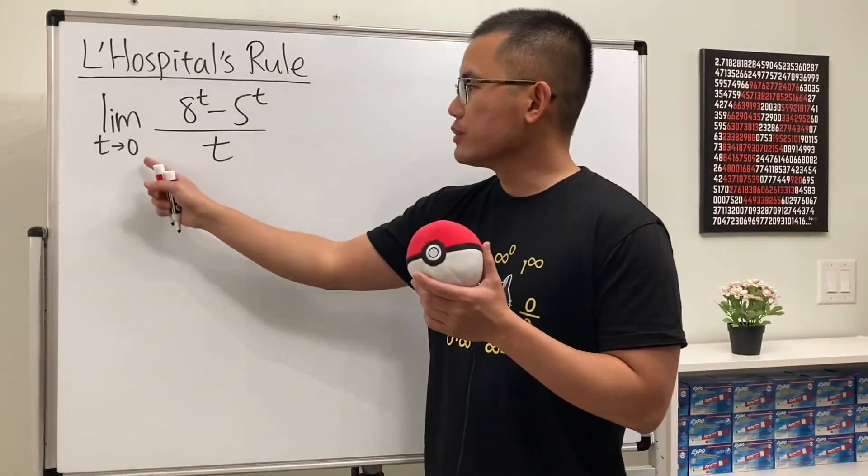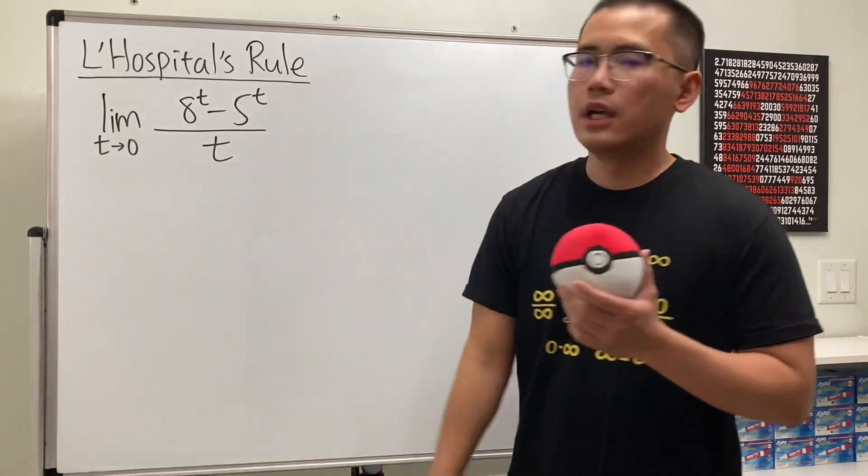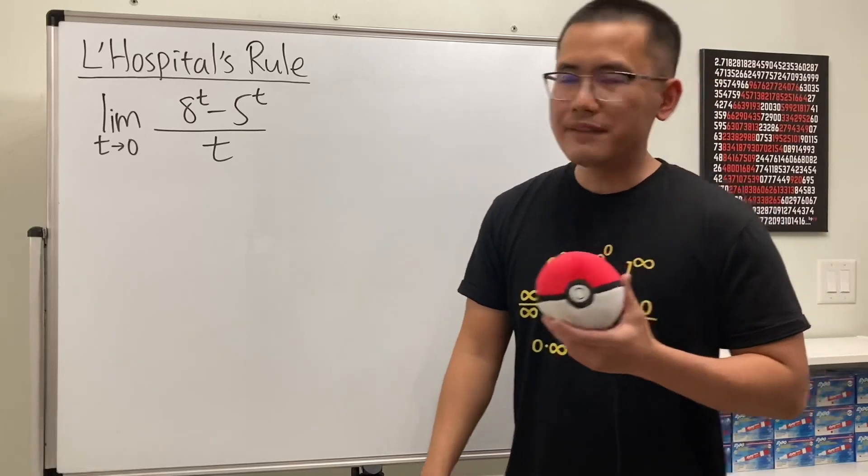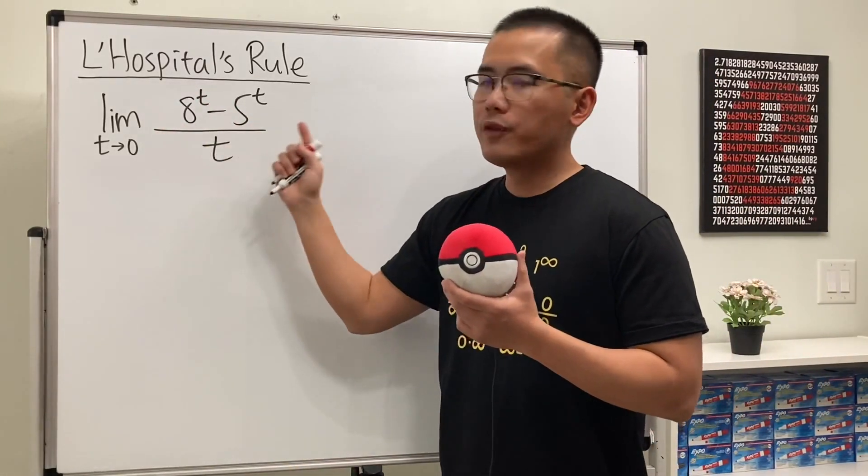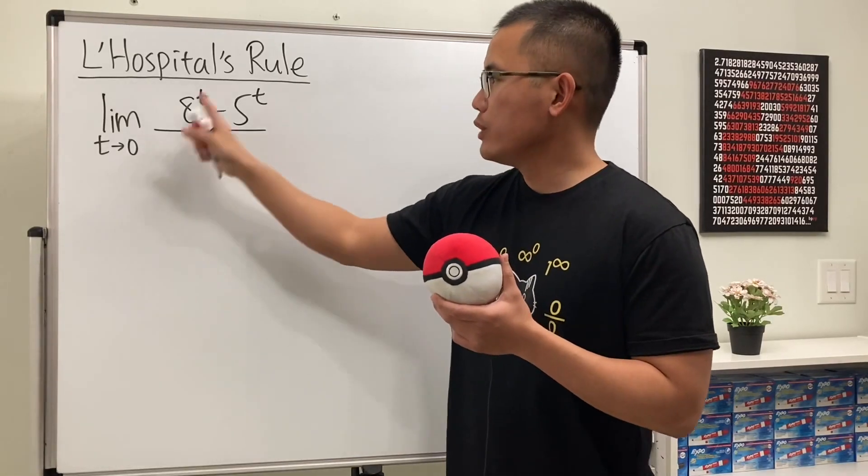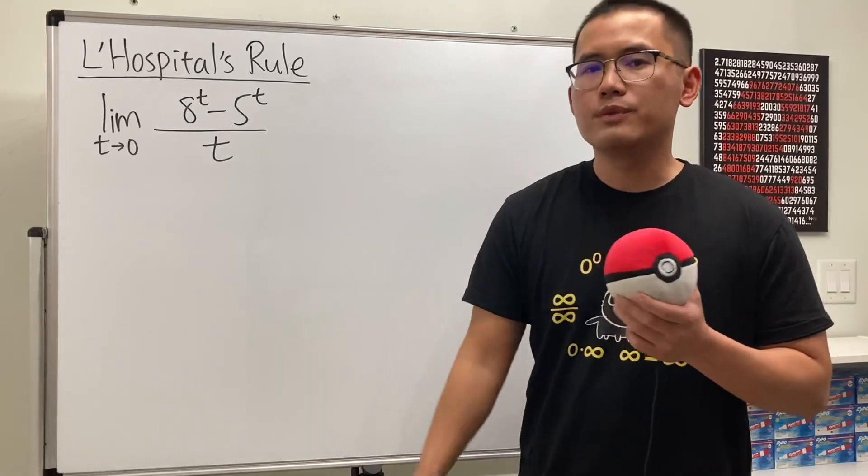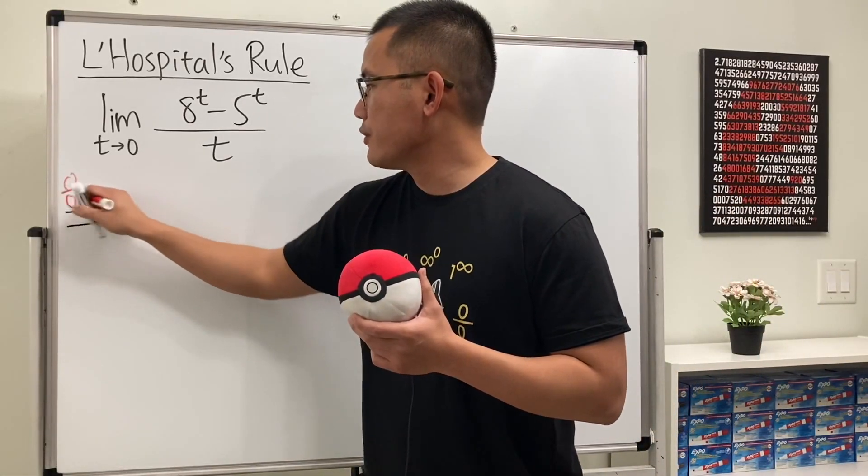Okay, here we have the limit as t goes to 0 of 8^t - 5^t over t. When we plug in 0 into all the t's, we will get 0 over 0. So we know we can use L'Hospital's rule. Let's go ahead and make that happen. This is the 0 over 0 case. L'Hospital's rule in action.